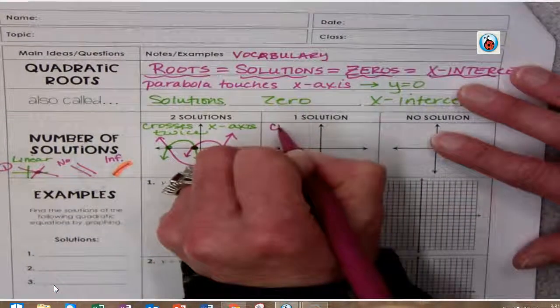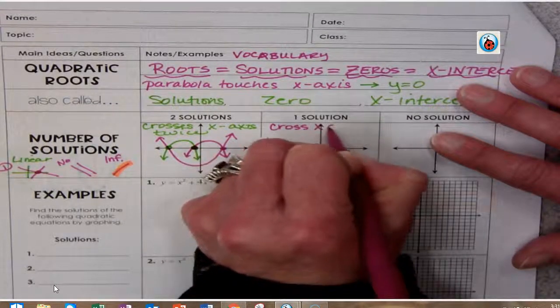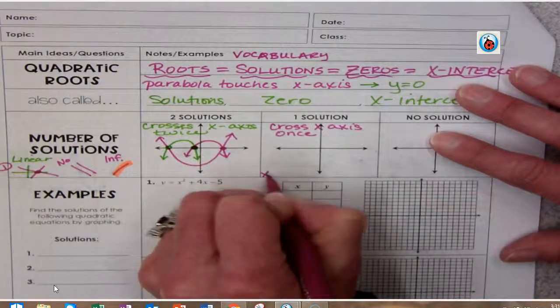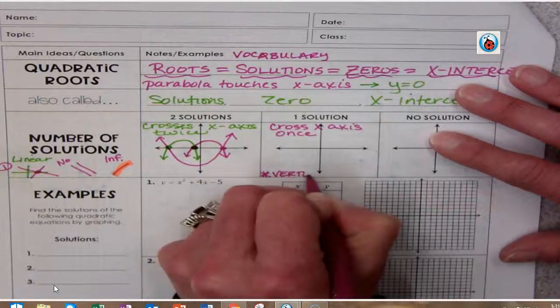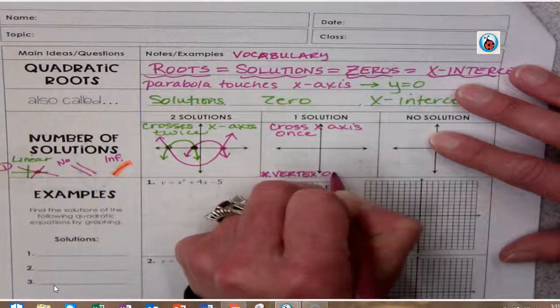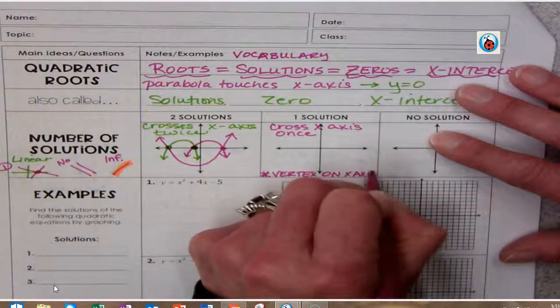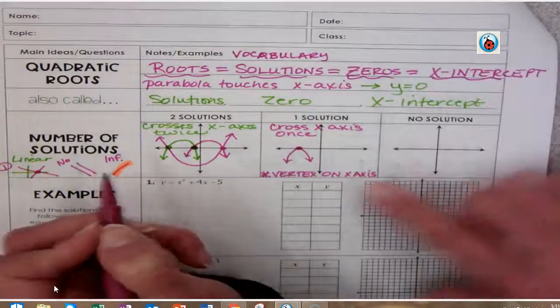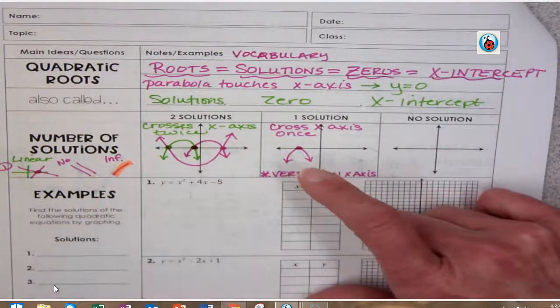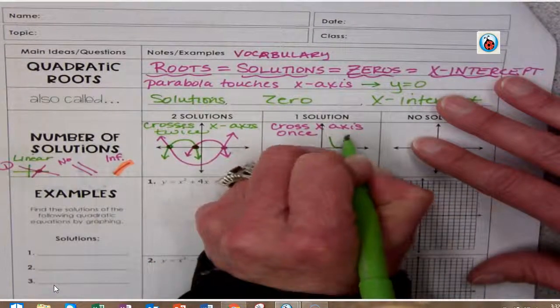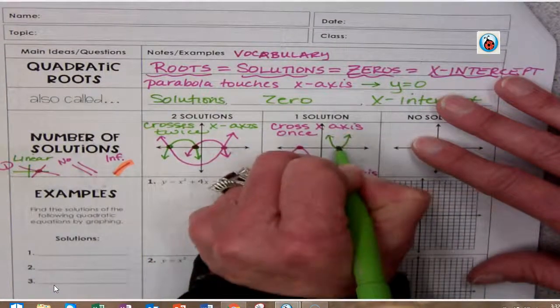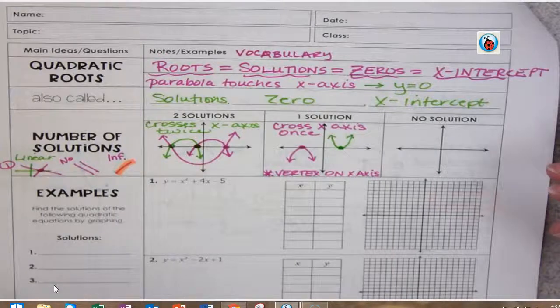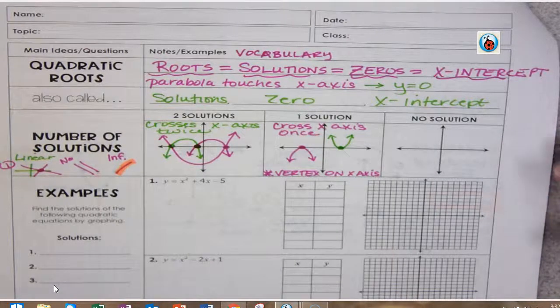Now if we have one solution, it's going to cross the x-axis once. So this is where your vertex is on your x-axis. That might look like this. My vertex is on the x-axis, or if it's positive, it's going to maybe look something like that. Those only cross the x-axis once.